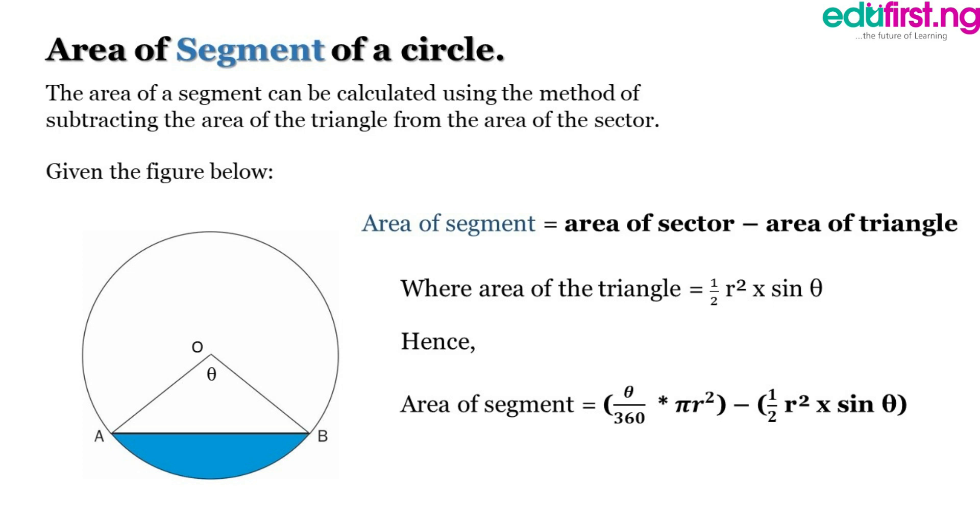So how do we calculate it? We calculate it using the method of subtracting the area of the triangle from the area of the sector. So in simple terms we calculate the area of a sector then we subtract the area of the triangle from it. How do we get the area of the triangle? Simply half r squared multiplied by sine theta, where r is the radius and theta is the angle it subtends at the center of the circle. Hence, area of segment is theta over 360 multiplied by pi r squared, minus half r squared multiplied by sine theta.